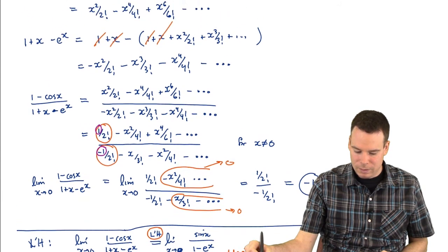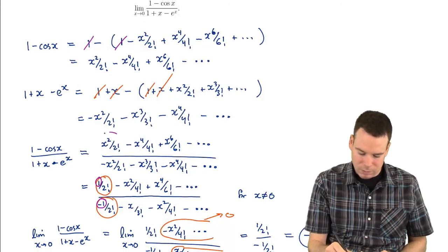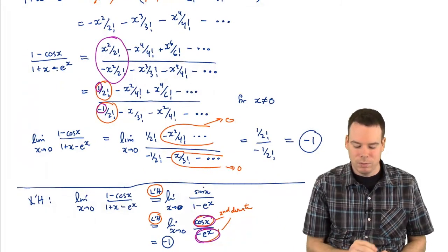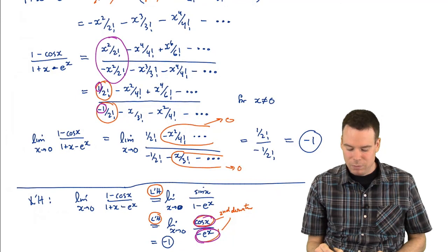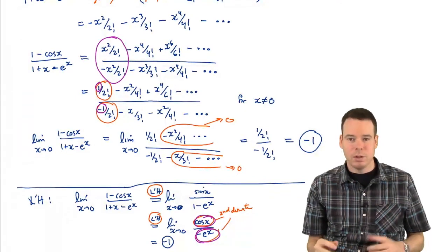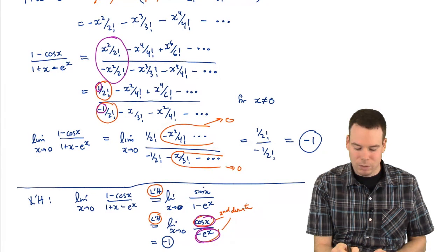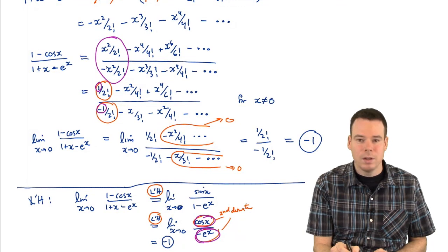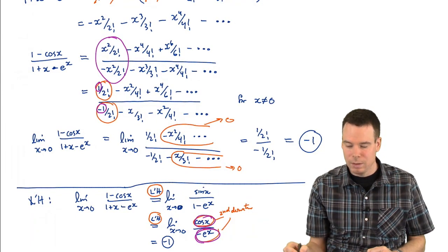So the numbers we're staring at — the 1 and the negative 1 — are really the second derivatives. They are exactly the numbers that came out when we plugged 0 in after applying L'Hôpital twice. The terms that survived in the series expansion were the only ones that matter, and they are related to the second derivatives of the original functions. L'Hôpital may have seemed like a mystery — why should the limit of the ratio equal the limit of the ratio of derivatives? With series, there's no mystery: the first surviving term starts with x squared over 2 factorial, whose coefficient is precisely the second derivative. That's the connection with L'Hôpital's rule.